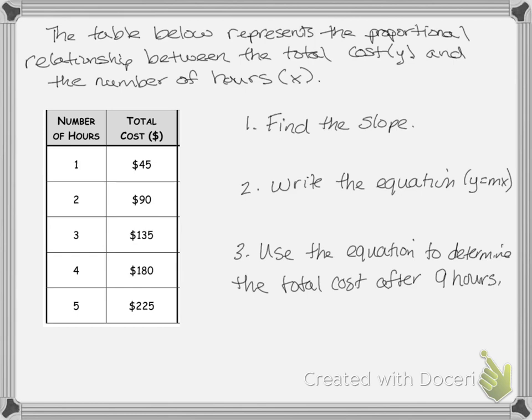Our second example: the table below represents the proportional relationship between the total cost y and the number of hours x. To find the slope from a table, I need to find my change in y. Going from 45 to 90 is an increase of 45; from 90 to 135 is also 45; from 135 to 180 is 45; and from 180 to 225 is also 45. So my change in y is 45.